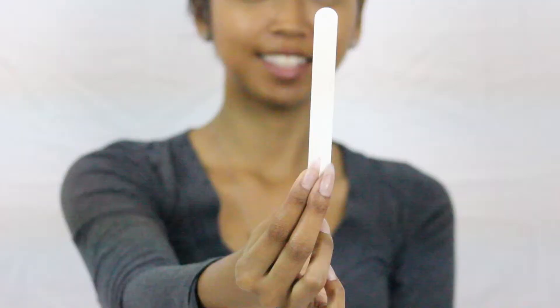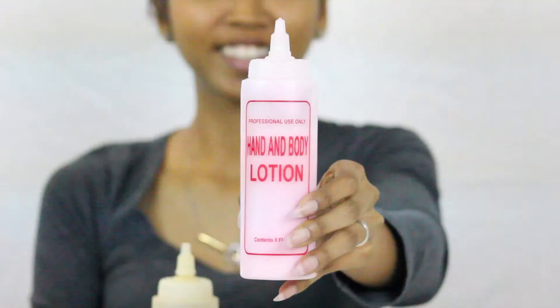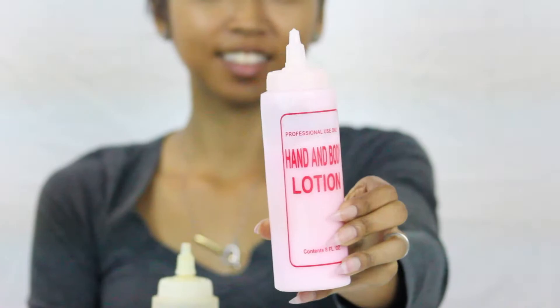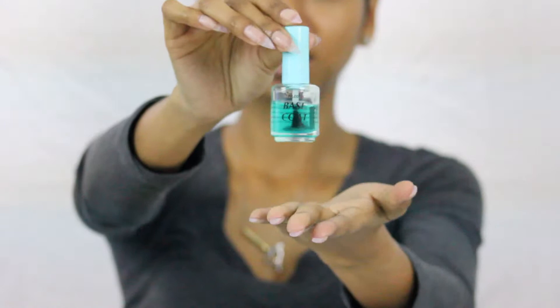So we're gonna start off with filing your nails. This is the file and buffing them, making them smooth. And then you have your preference between hand and body lotion or Cuticle Softener.